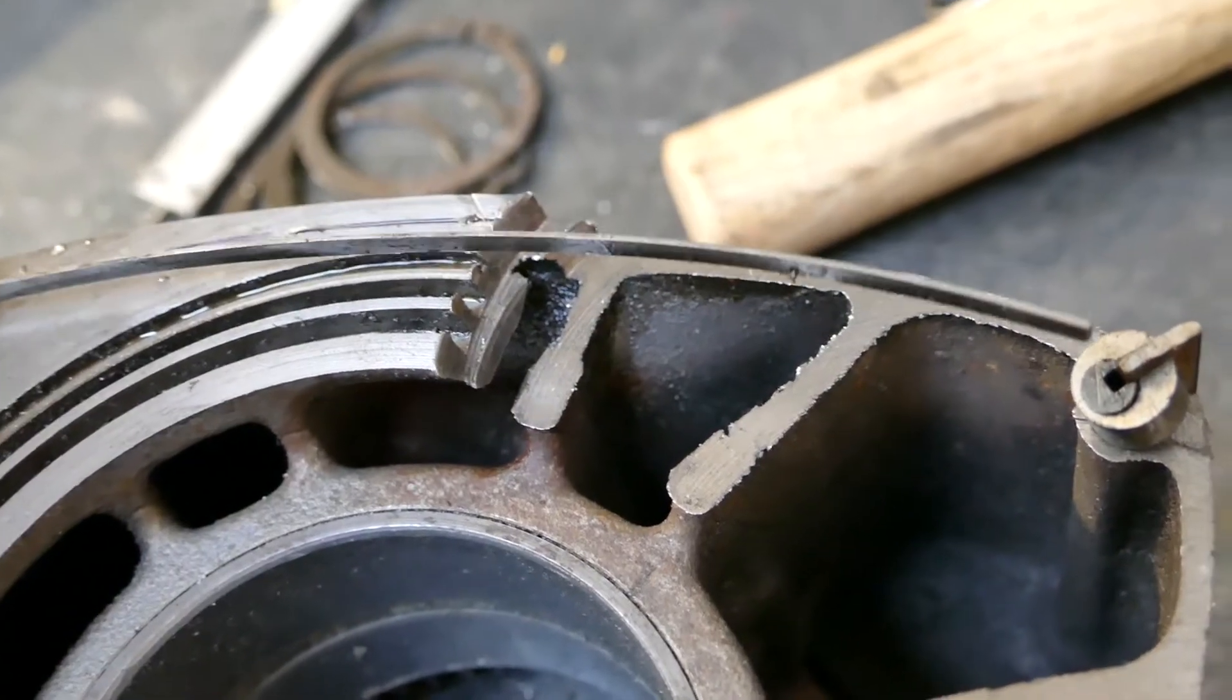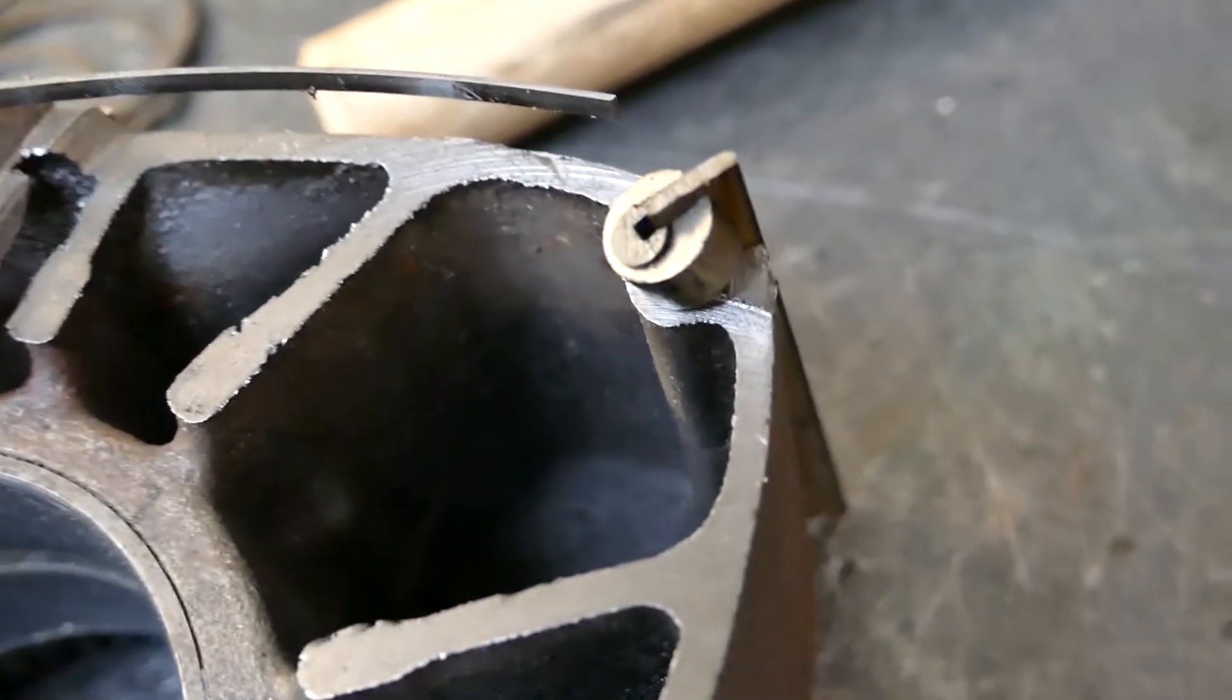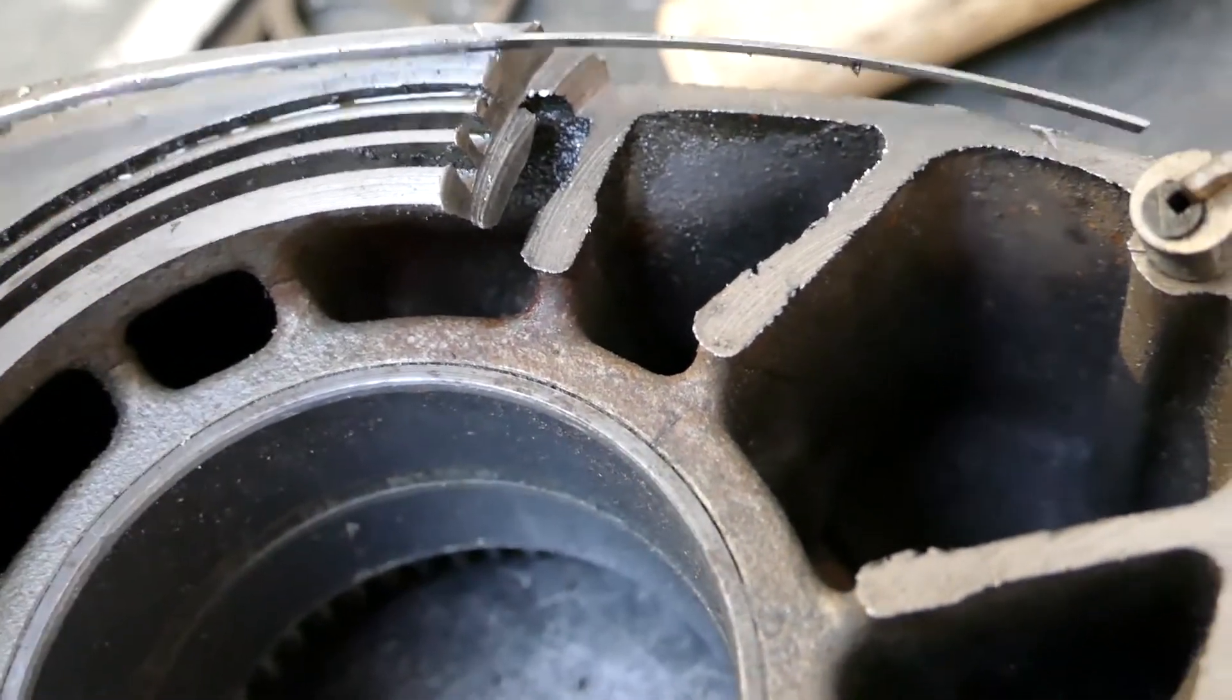Alright so it's off the mill, let's have a closer look at what's inside. So you can see the side seal, corner seal and the apex seal where they normally sit and also you've got your oil control inner and outer rings.